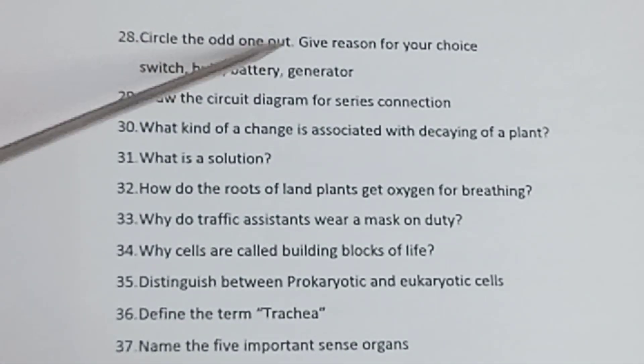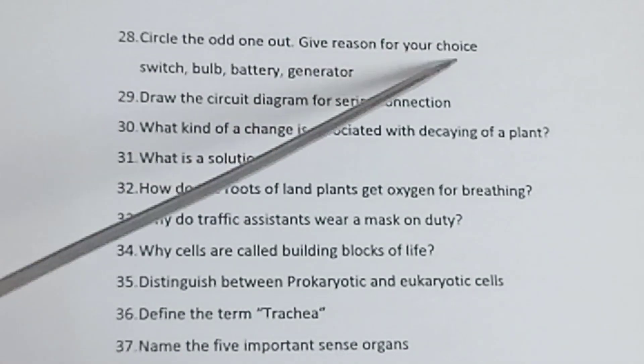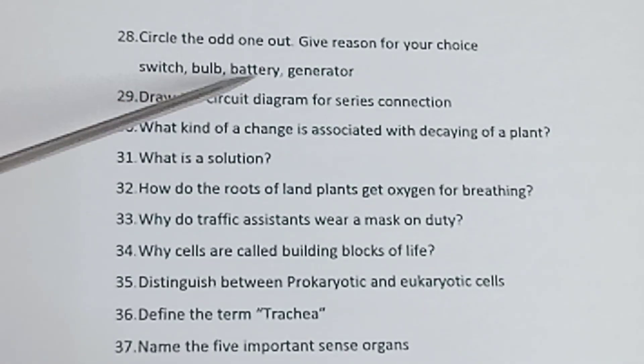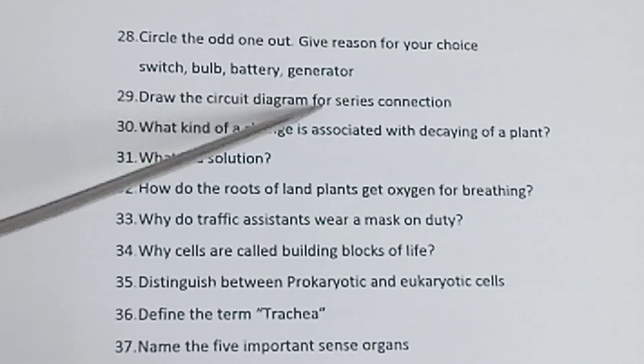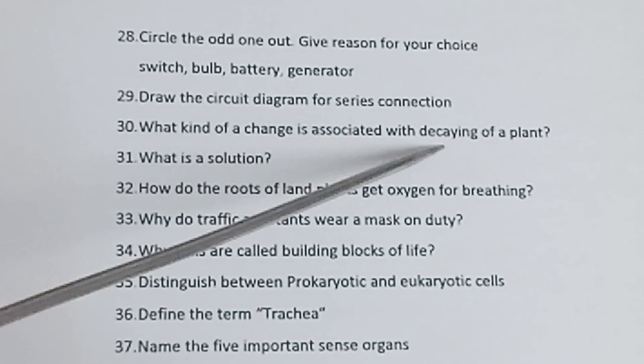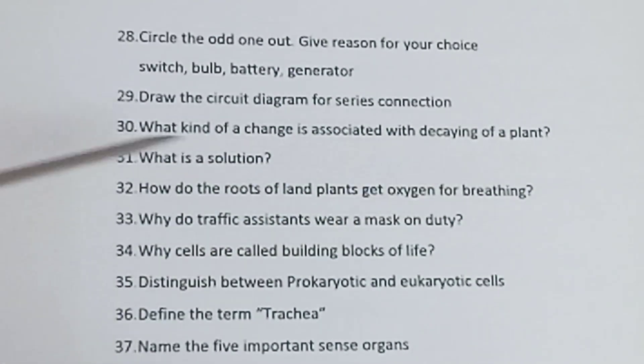Question 28: Circle the odd one out, give reason for your choice - switch, bulb, battery, generator. Question 29: Draw the circuit diagram for series connection. Question 30: What kind of change is associated with decaying of plant?